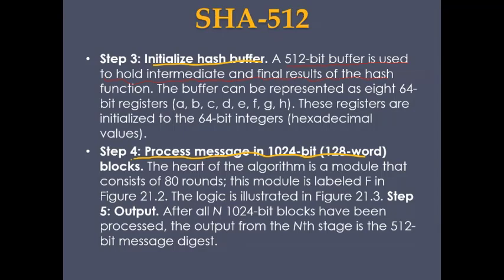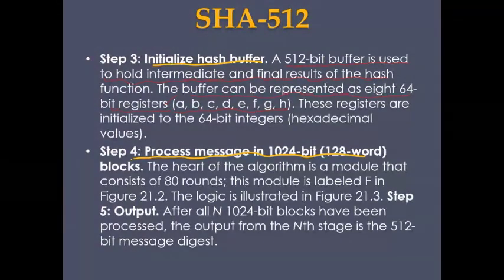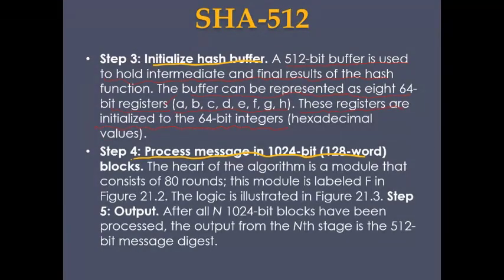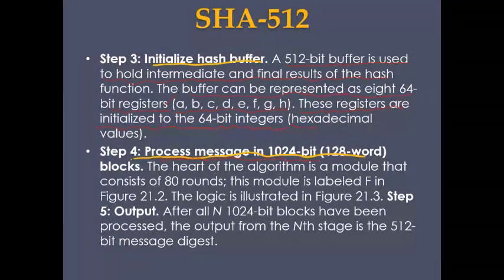The hash buffer is represented as eight 64-bit registers: a, b, c, d, e, f, g, h — high-speed memory registers used to keep values. These registers are initialized to specific 64-bit hexadecimal integer values. Step four: process the message in 1024-bit blocks, which corresponds to 128-word blocks.